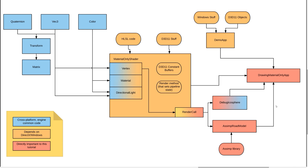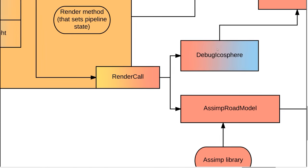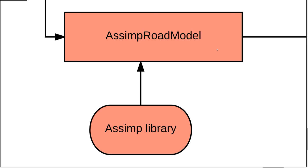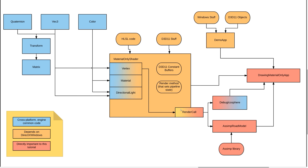Here's a quick diagram of the demo. In blue is the engine code I reuse for most demos - mostly math stuff. The orange/yellow code is Direct3D-specific, most importantly the material-only shader, which encapsulates everything Direct3D needs to draw an object colored by the material. There's also a struct called the render call, which converts between logical vertices and indices and the Direct3D buffers. Everything is written except the Assimp road model, which is what I'll be focusing on.